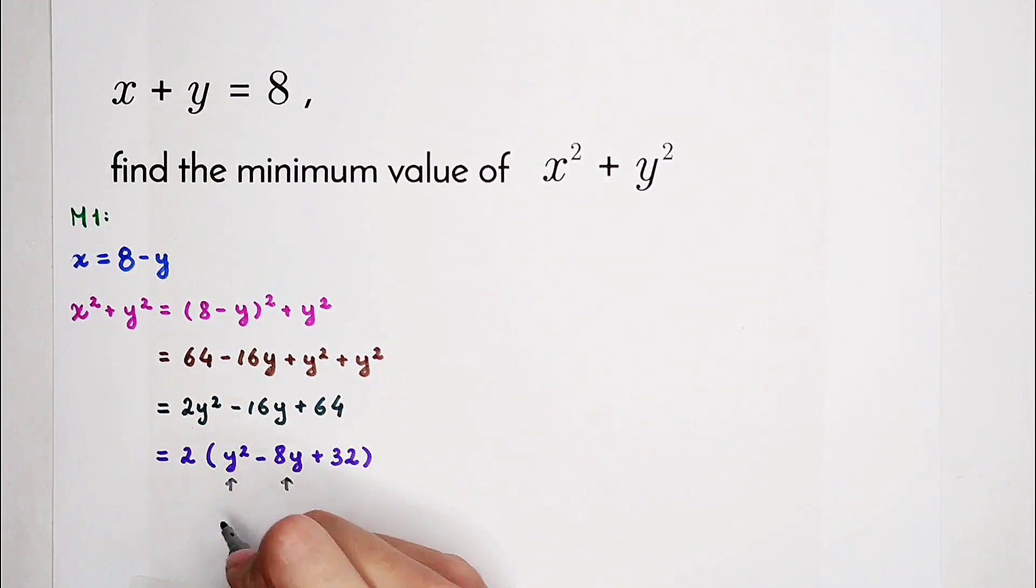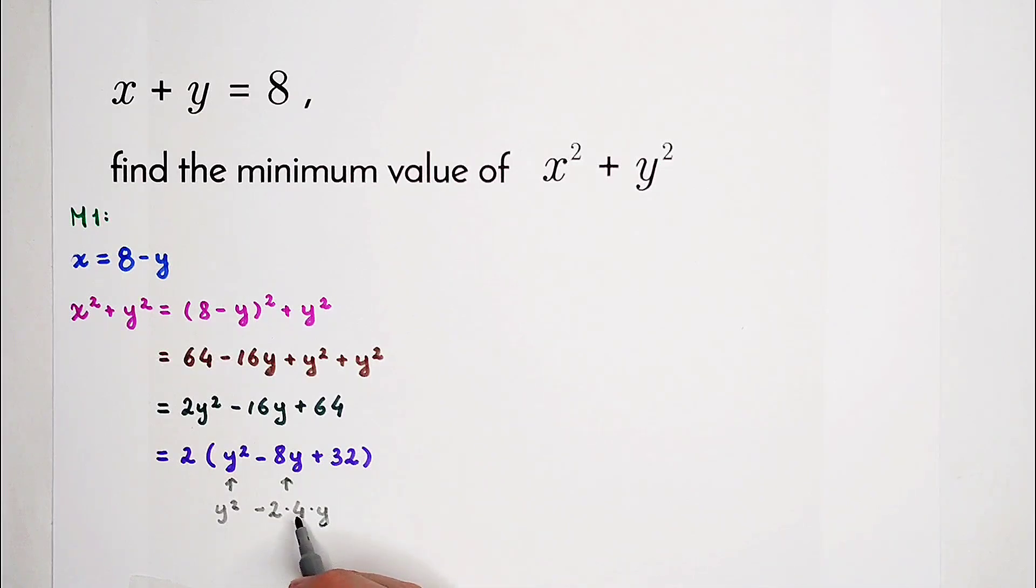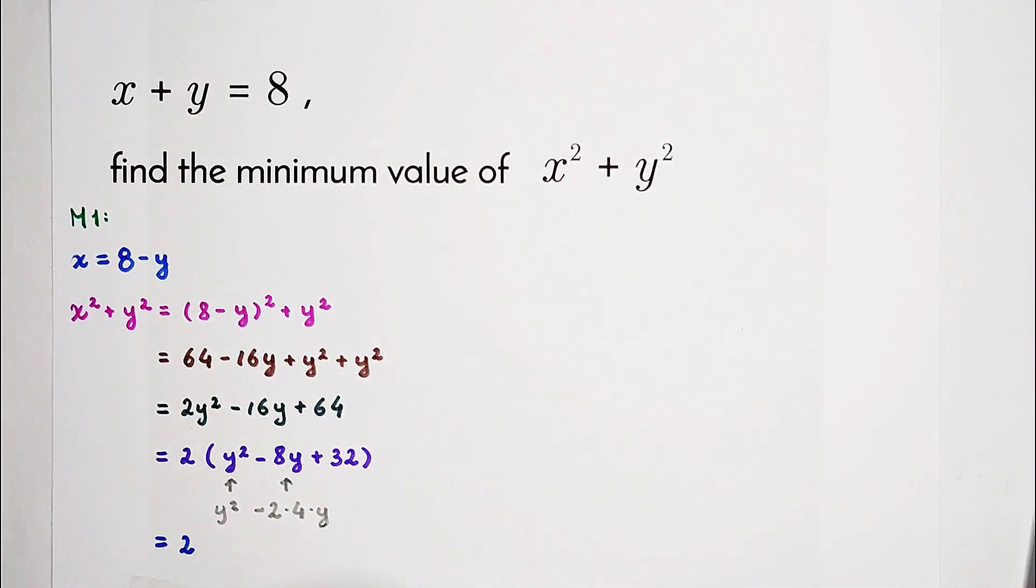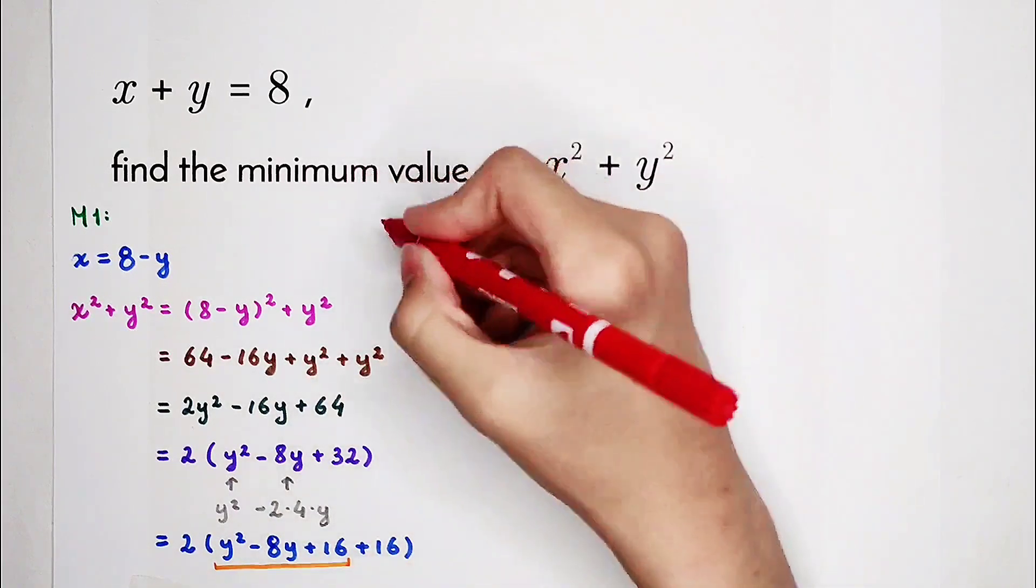Y squared is y squared. Minus 8y we can write as minus 2 times 4 times y, so we know that b is 4. So now, if we can add 4 squared, then the thing in the bracket, or a section from the thing in the bracket, can be written as a binomial formula. So it's 2 times y squared minus 8y plus 4 squared, 16. Now we should write 32, so we've added a 16 here, so only lack 16 right here. Now we know that this thing is a binomial formula: y minus 4 all squared.